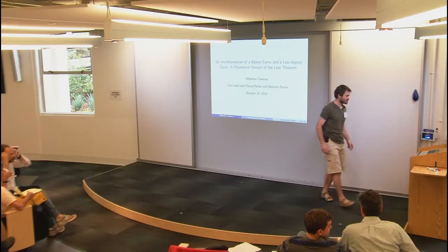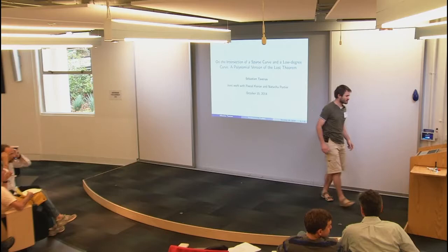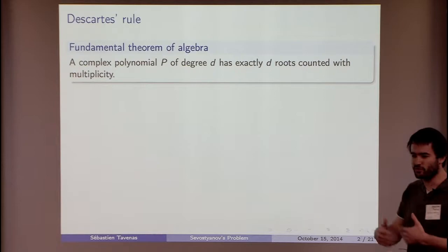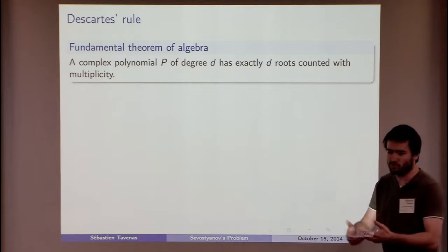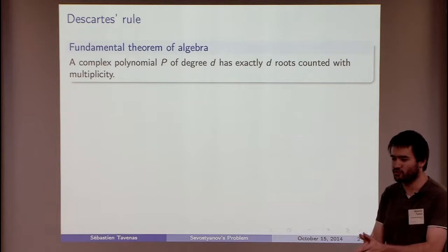This is a polynomial version of the loss theorem. Exactly what we want: we want to bound the number of roots of some particular polynomial system. The first very basic thing — if you want to count the number of complex roots of a polynomial of degree d, we know the number of roots is directly d.